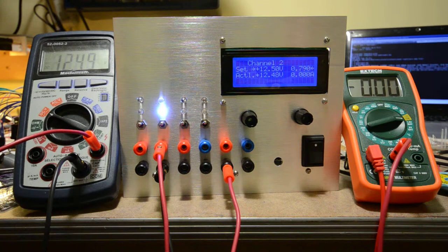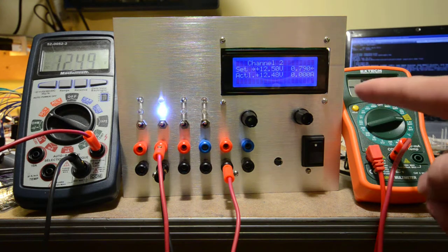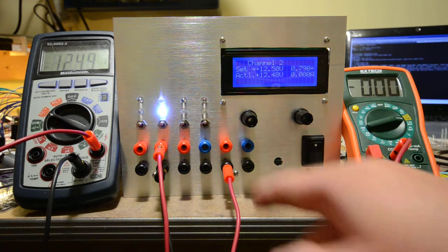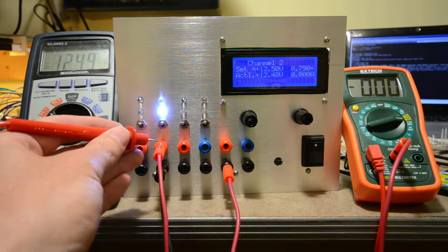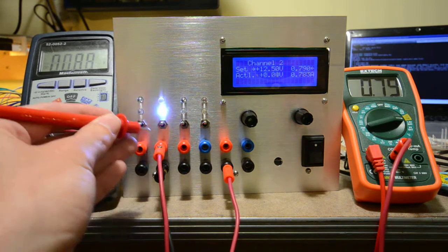Right now I'm going to short out the power supply. This multimeter is connected through to ground, and if I short out the voltage you can see the current.